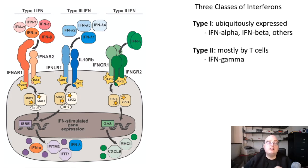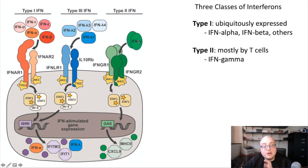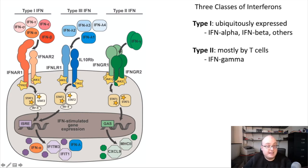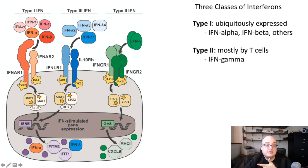Type 2 interferon is primarily interferon gamma and its receptor, interferon gamma receptor or IFNGR. Also a dimeric receptor that signals through JAK and STAT, just like all the others. Interferon gamma is primarily expressed by T cells, so we really think of it as an adaptive immune cytokine because it's expressed by activated T cells. It also activates gene transcription in similar ways to the other two interferons and has important roles not only as an antiviral cytokine, but also as a mechanism by which we shape adaptive immune responses as an effector mechanism of T cell activation.